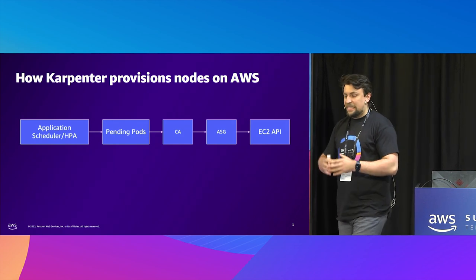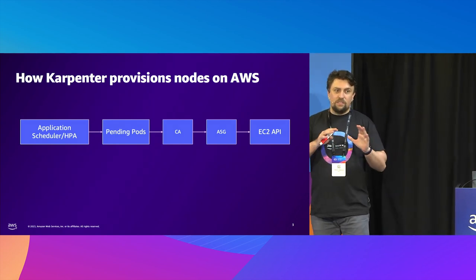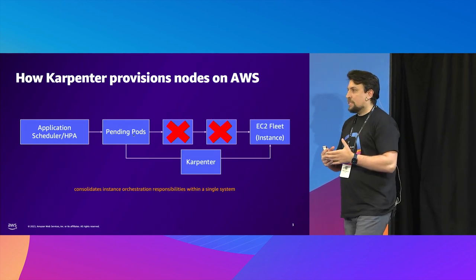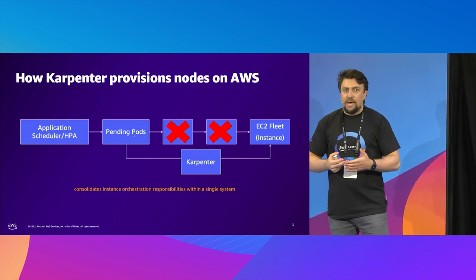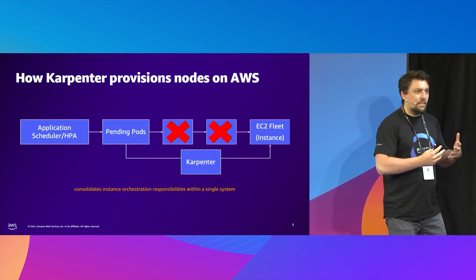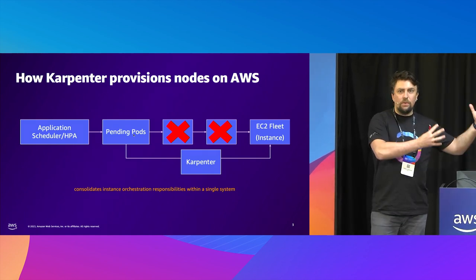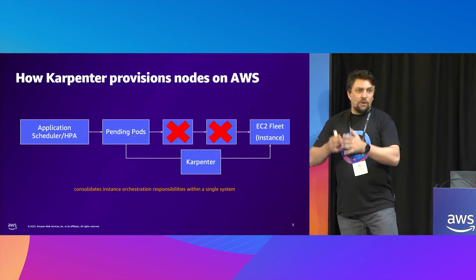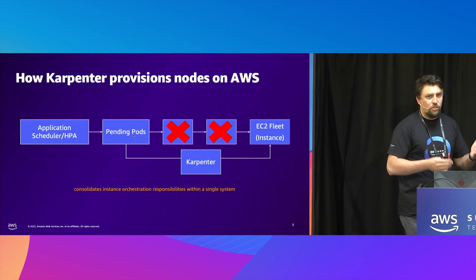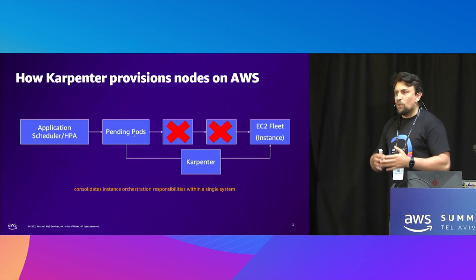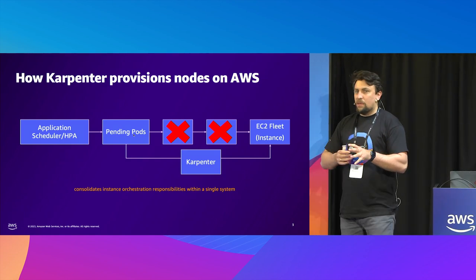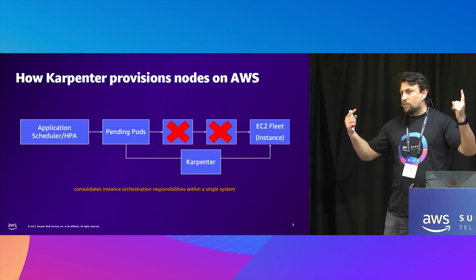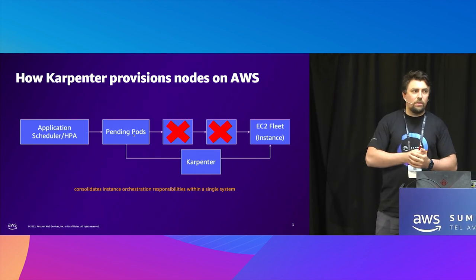But what if we delete the not-needed parts of this schema — for example, Cluster Autoscaler and ASG? What if Kubernetes can communicate directly with EC2 API? If we need to provide some new resources, we can get exactly which ones are available in my region, in my availability zone, and so on. That's exactly how Karpenter currently works — it communicates directly with EC2 API. Maybe you have some persistent volume based in availability zone 1a, which means you have to create your new instance also in availability zone 1a.